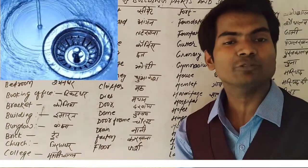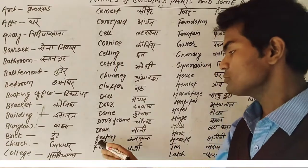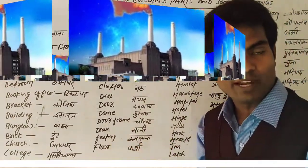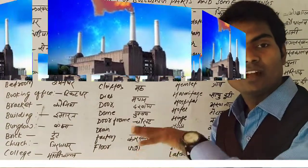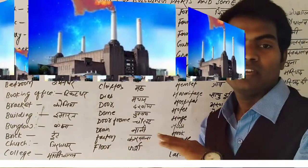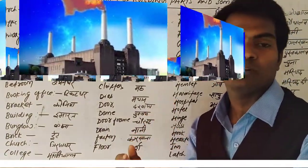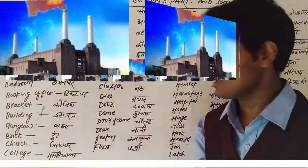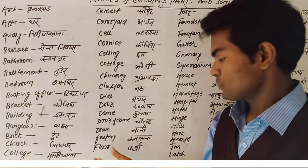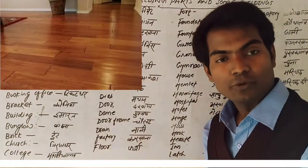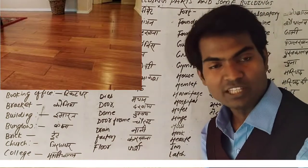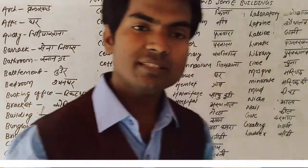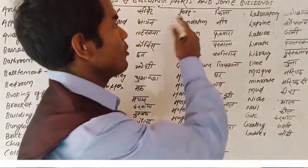Factory — factory means 'karkhana,' where a large number of people work. Floor — floor ka matlab 'farsh' hota hai, the lower part, the ground — use kehte hain 'zameen.' Foundation — jab hum ghar banate hain toh hamara foundation kaafi zyada majboot hona chahiye, strong hona chahiye. Foundation ka matlab hota hai 'neev.' Fountain — fountain ka matlab hota 'fawara.'